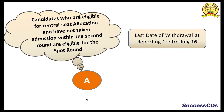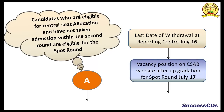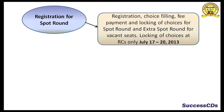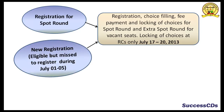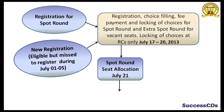Do remember, the last date of withdrawal at the reporting center is July 16th. The vacancy position on the CSAB website after upgradation for spot round is July 17th. So now candidate A, who are registered for spot round, have to do the registration, choice filling, fee payment, and locking of choice for spot round and extra spot round for vacant seats, to be done between July 17th and 20th. This new registration is also for those candidates who are eligible but missed registering during July 1 to 5.